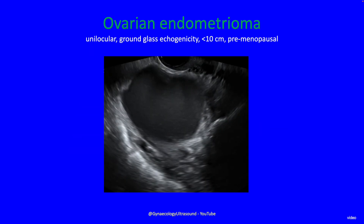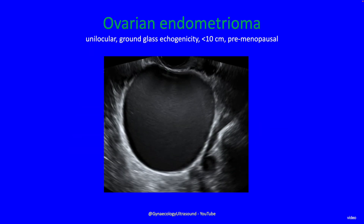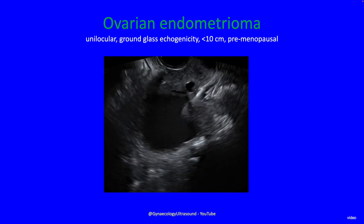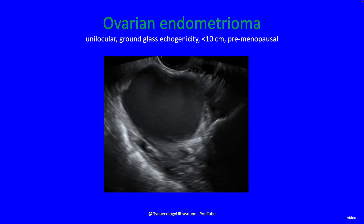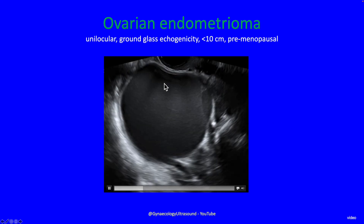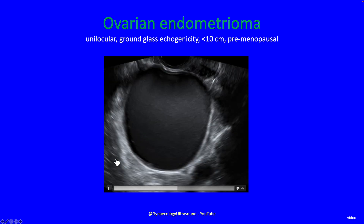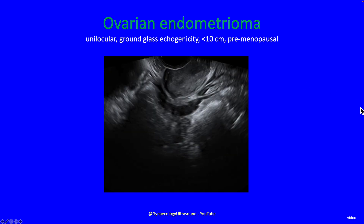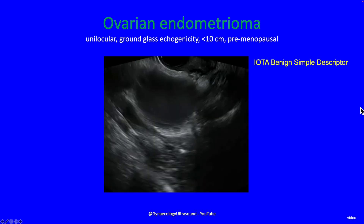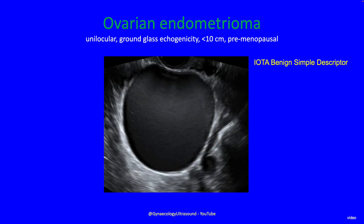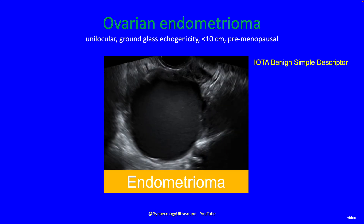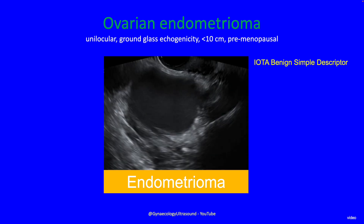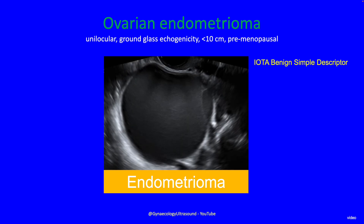This is an example of such an ovarian endometrioma. You can see it's unilocular — there's one locule, no solid component, the echogenicity is ground glass, it's less than 10 centimetres in a pre-menopausal woman. It's so obviously an endometrioma that this has become an IOTA benign simple descriptor — something you recognise immediately when you see it.